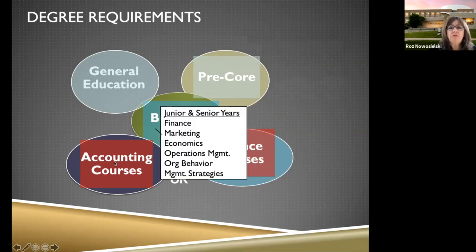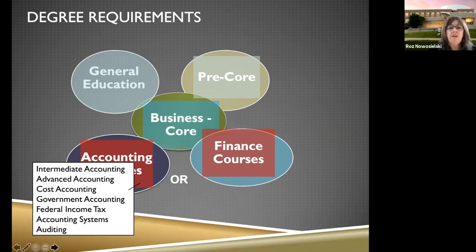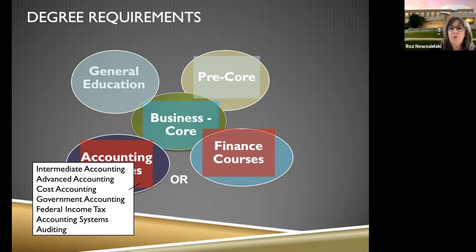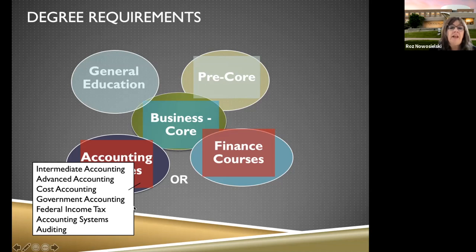Some of the business pre-core classes feed into the core components of business study — things like finance and marketing, deeper economic theories, operations management, organizational behavior, and management studies. If you choose the accounting major, your accounting course structure will include intermediate accounting, advanced accounting concepts covering business consolidation, cost accounting — which is very helpful for the corporate route — government accounting, federal income tax, accounting systems, and auditing.